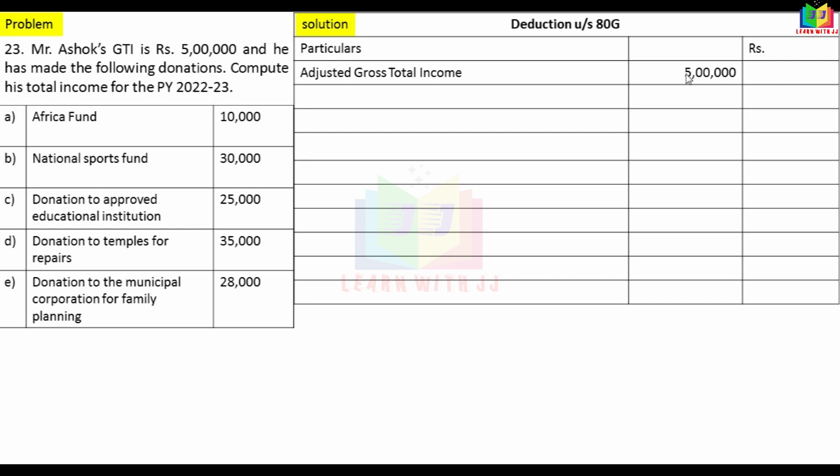After computing the Adjusted Gross Total Income, we find the List A deduction. The percentage qualifying amount comes to 30,000, and after adding 10,000 plus 30,000 it is 40,000. This 40,000 is the List A deduction claim. Now moving to List C.